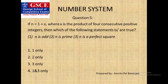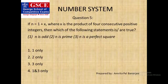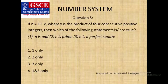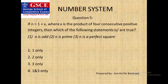Now the fifth question: if n equals 1 plus x, where x is the product of four consecutive positive integers, which of the following statements is or are true? For these questions we always consider any value for x. For example, if x equals the product of the first four natural numbers, that is 24, then n equals 24 plus 1 equals 25. Now 25 is an odd number as well as a perfect square, so the correct option is option 4, that is 1 and 3 only.